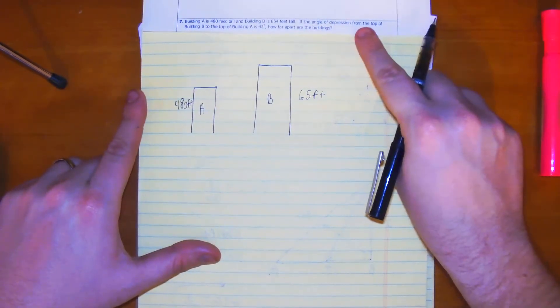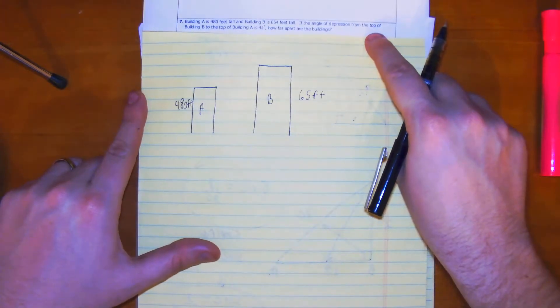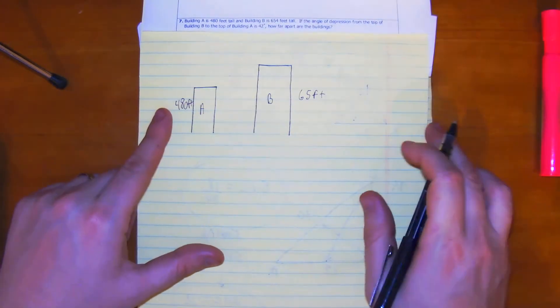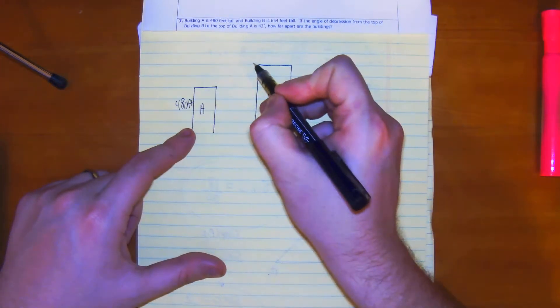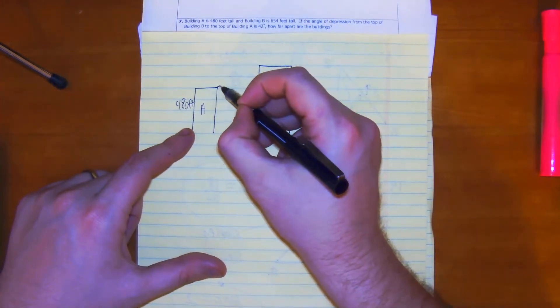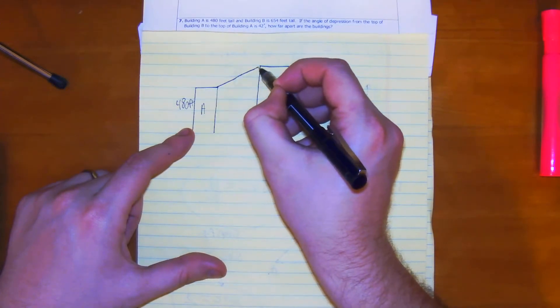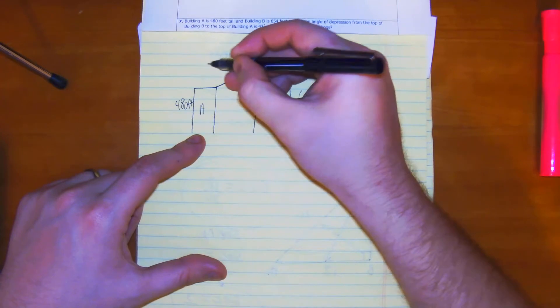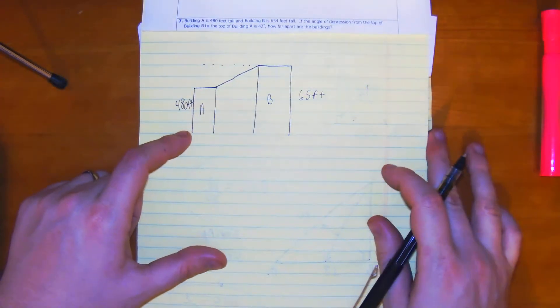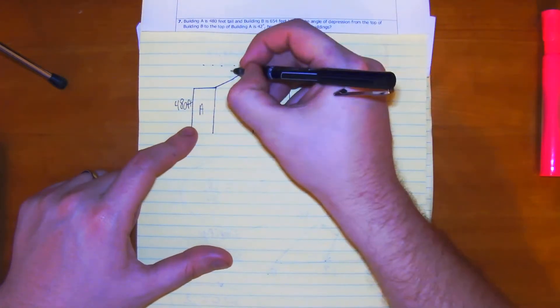The angle of depression from the top of building B is 42 degrees. How far apart are the buildings? So this is going to be 42 degrees here.